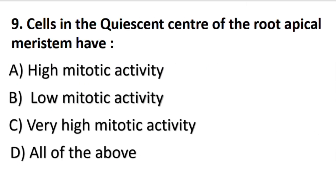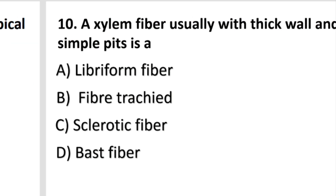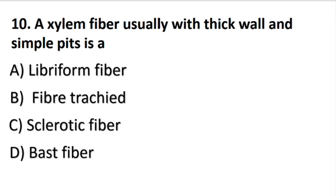Cells in the quiescent centre of the root apical meristem have? The answer is B part: low mitotic activity. Xylem fiber, usually with thick wall and simple pits, is known as libriform fiber.